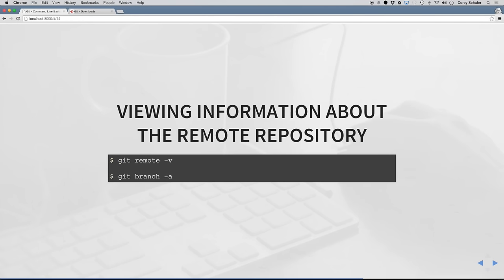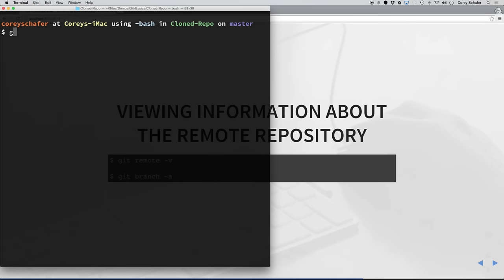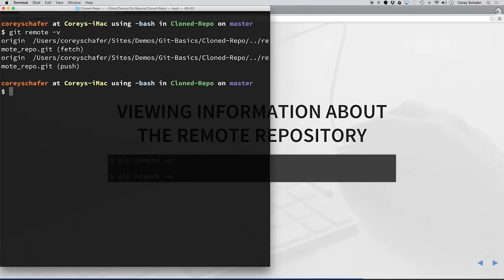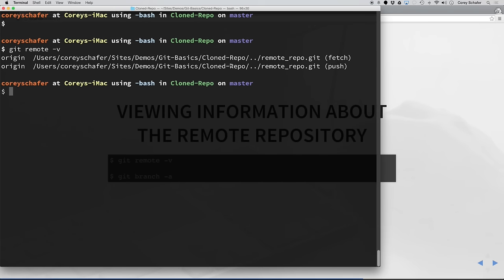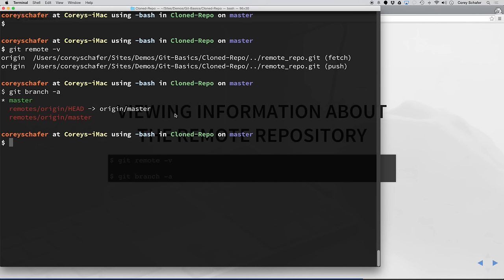Now that we've cloned that remote repository, let's see how we can view information about it. We can use a couple of commands: git remote -v and git branch -a. If I do git remote -v, it lists the information to the repository here — this is just the location on my local machine. And if I do git branch -a, it will list all of the branches in our repository, not only locally but remotely as well.